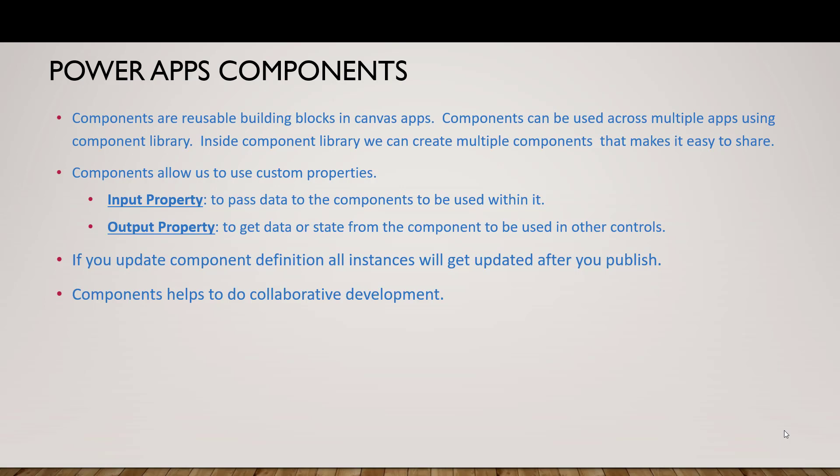Components allow us to use custom properties. When you are creating a header component, 80–90% of it will remain the same across all apps, but there will be minor changes — for example, the heading part in the header may change across apps. We can create an input property or output property. Using these properties we can make our component configurable. There are two types: input property and output property.